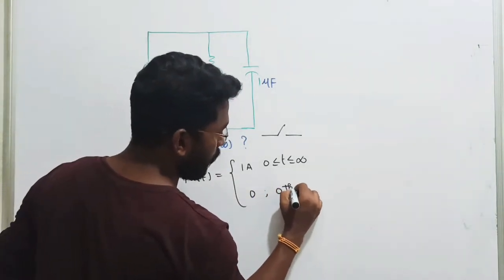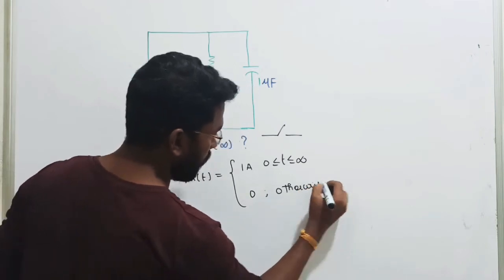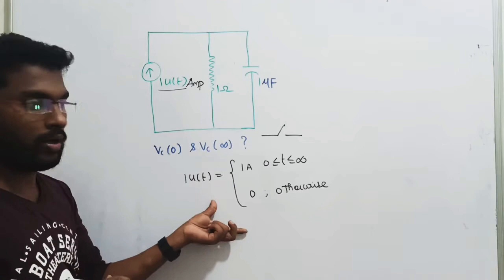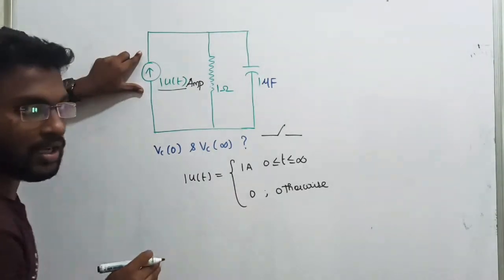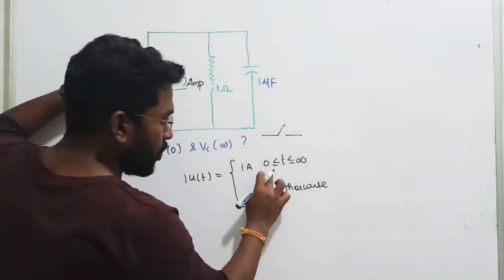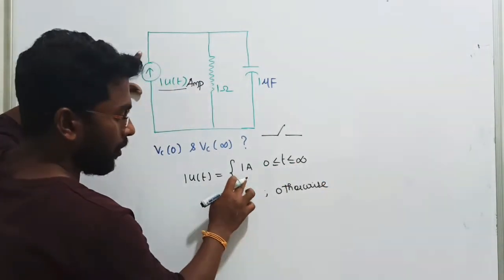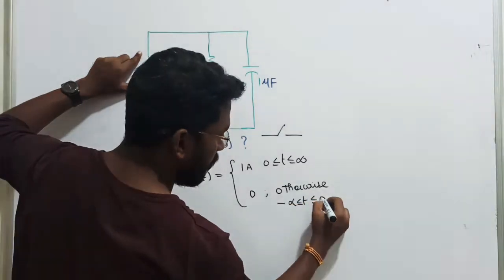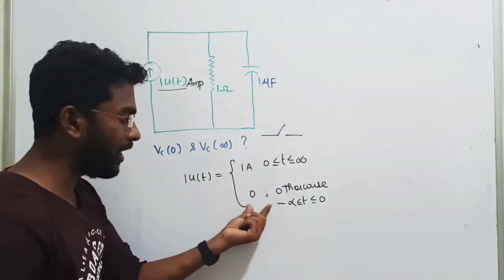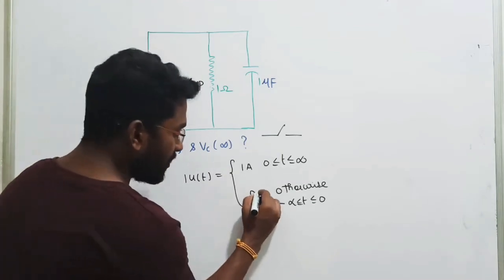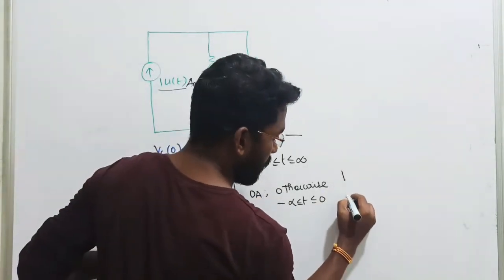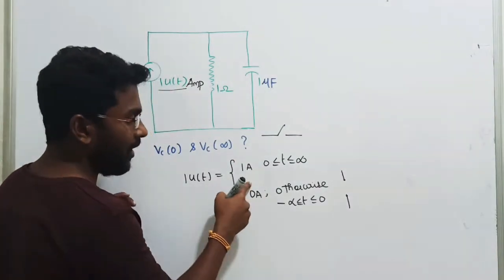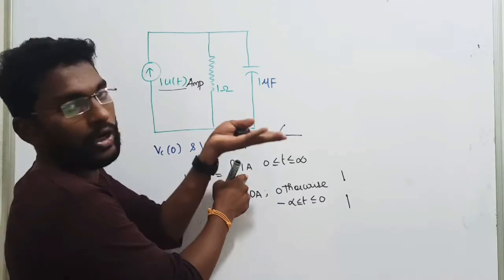The value of u(t) is going to be 0 otherwise — remaining in the end of the period, the value of u(t) is going to be 0. So what happens to the current source? From minus infinity to zero, the current source value is zero. Current is zero and the circuit is open circuit, so the current source will be open circuit.